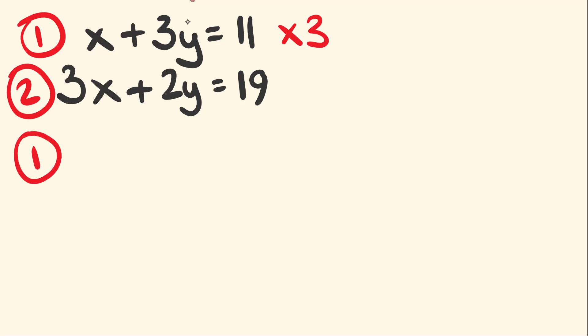So let's do that and get a new equation 1. So we have x multiplied by 3. This gives us 3x. This is plus 3y times 3, which is equal to 9y. And this is equal to 11 times 3, which is equal to 33.